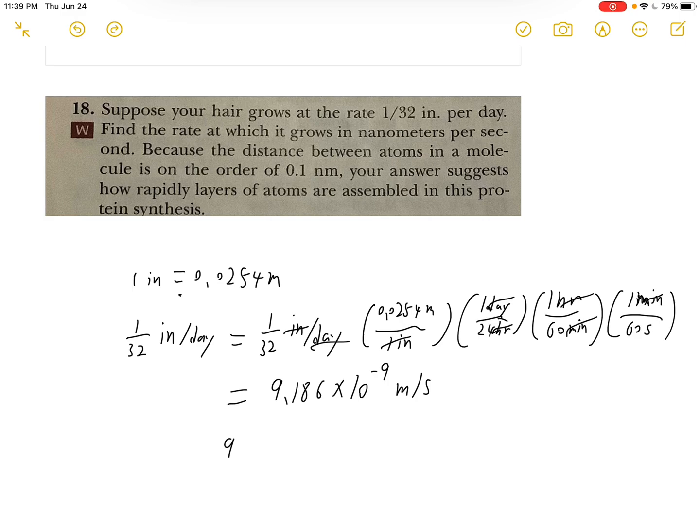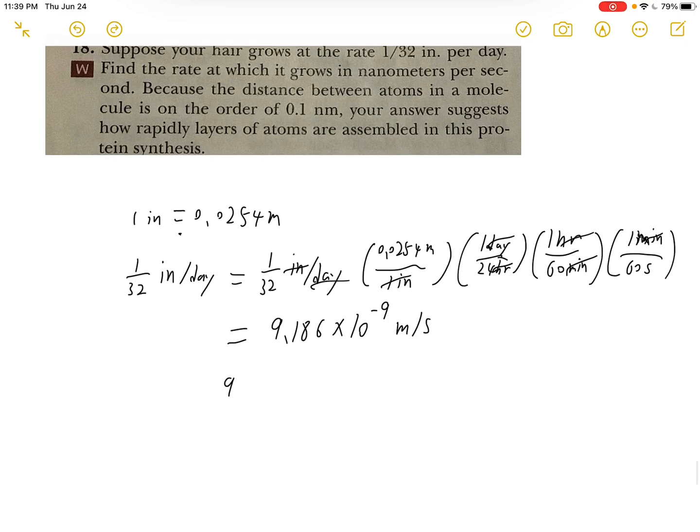And then we will need to convert the meters to nanometers. So 9.186 times 10 to the negative 9th meter per second times 10 to the 9th nanometers over 1 meter. Then we will have 9.186 nanometers per second.